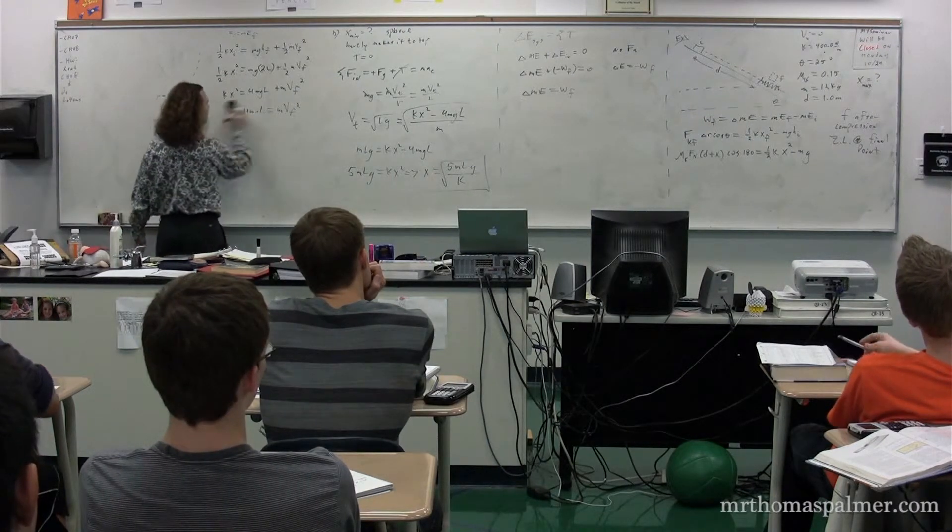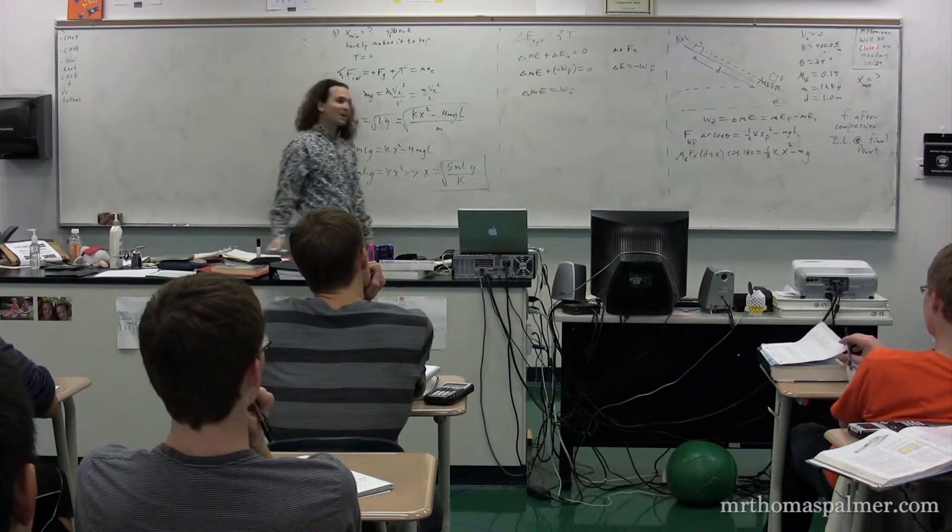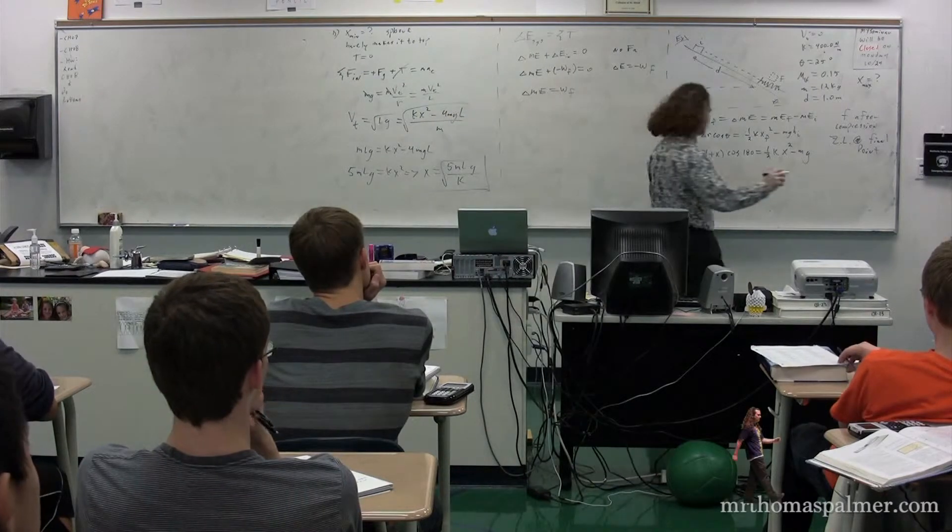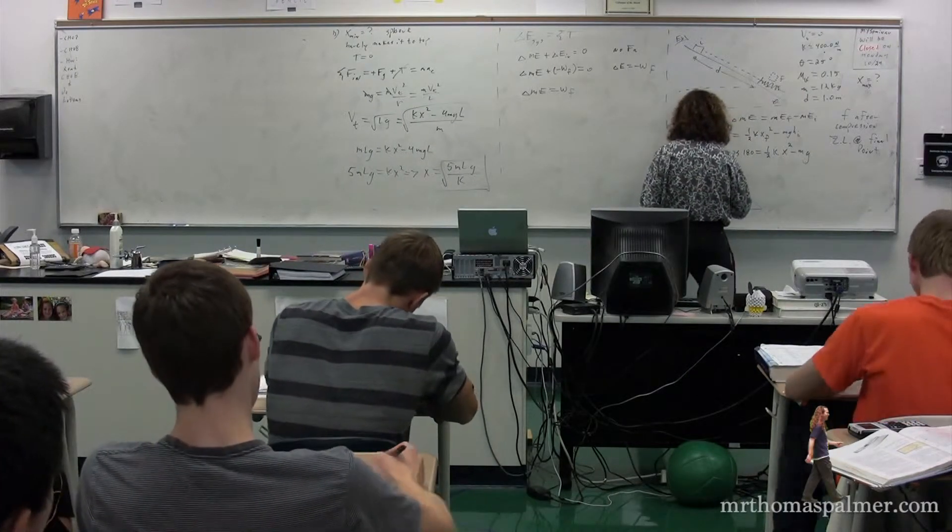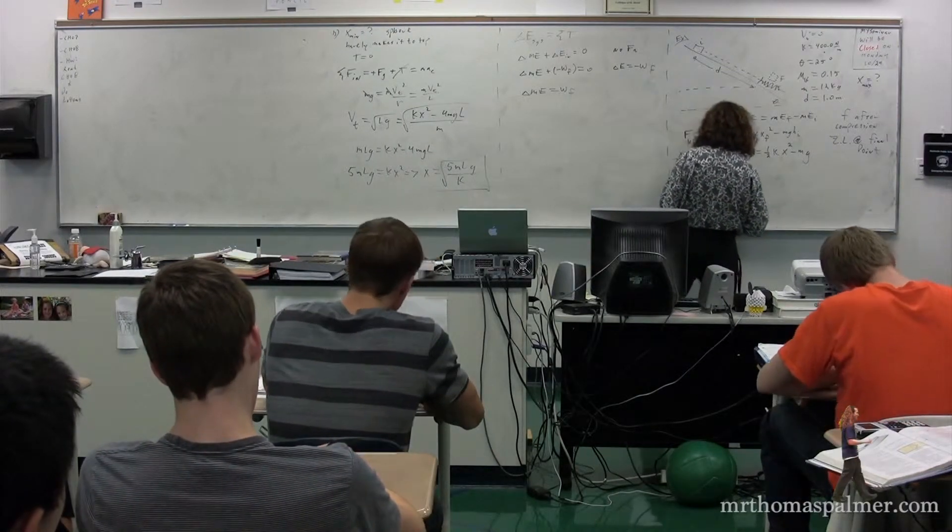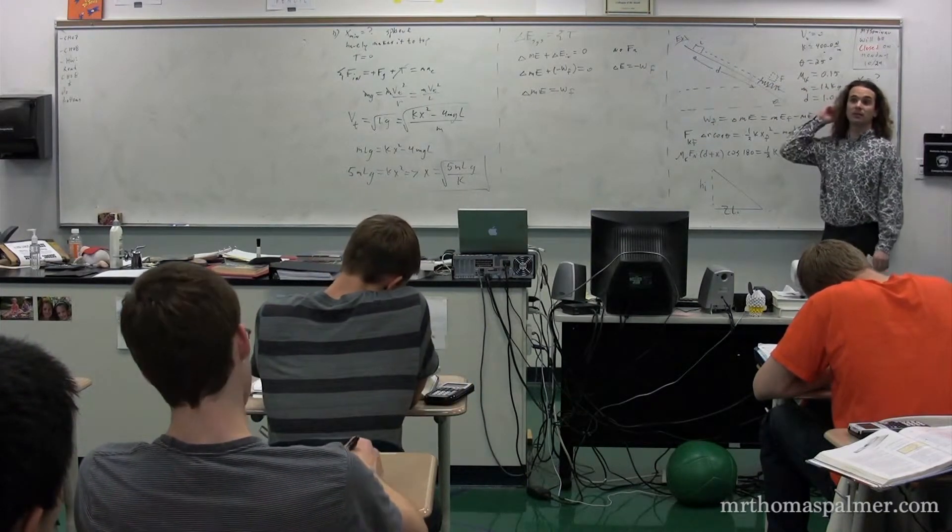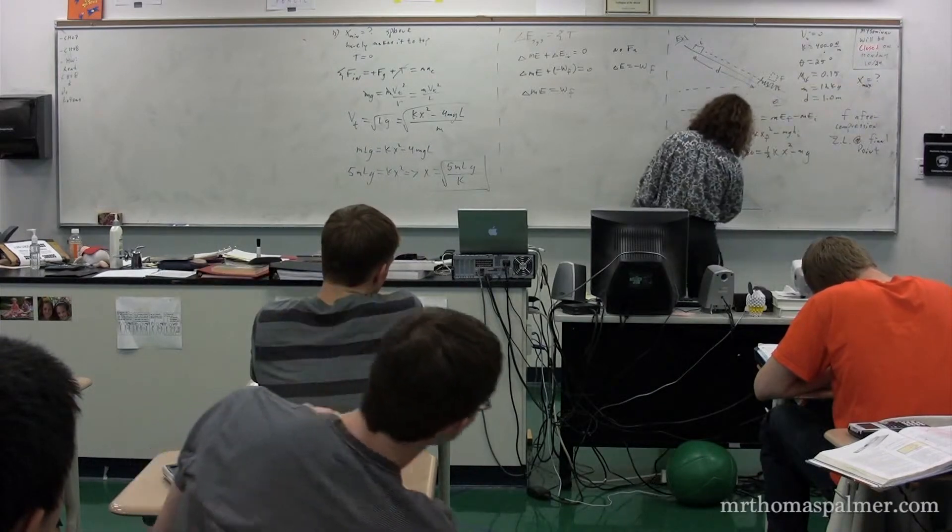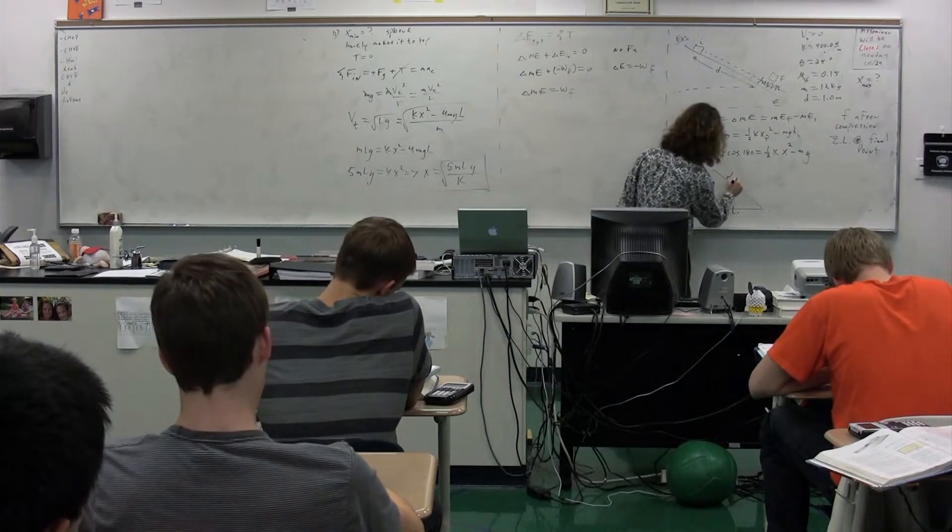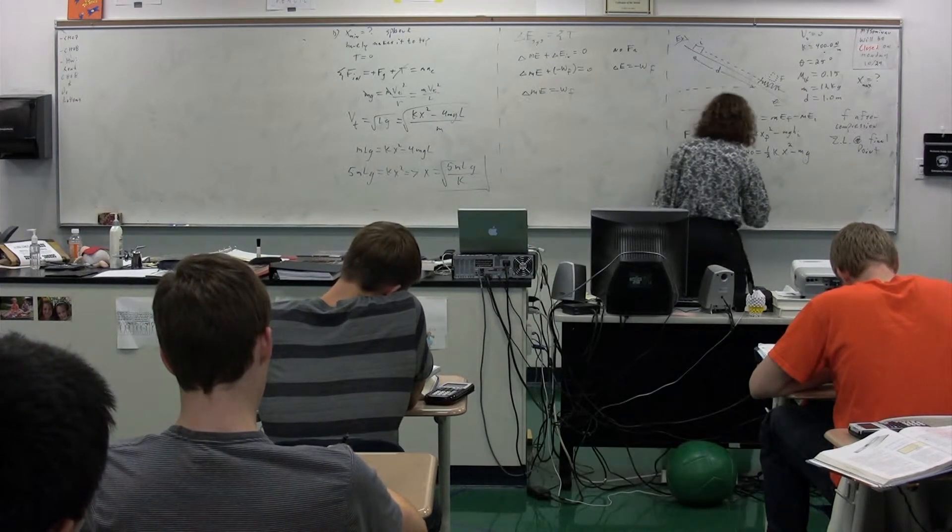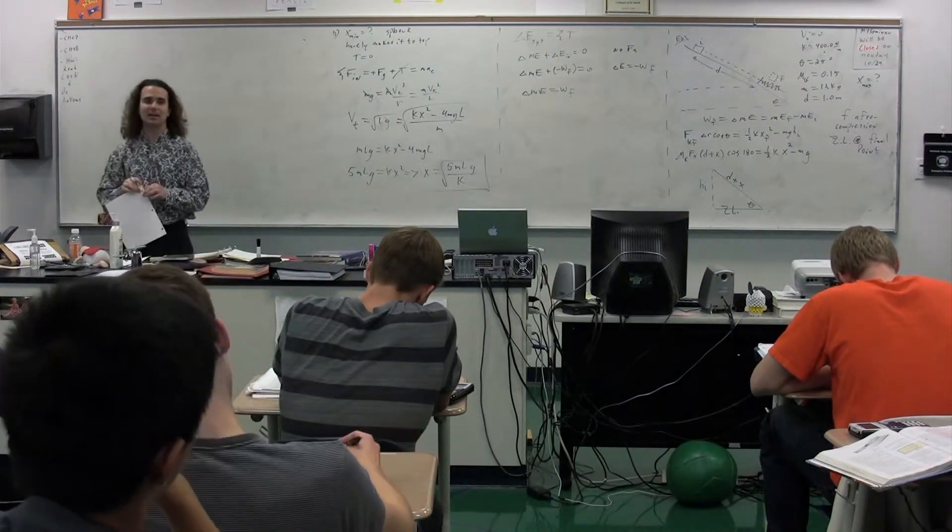No, I don't know. Okay. Let's draw a picture. Height initial is here. Zero line is here. What's on the hypotenuse? D. Say again? D plus X. D plus X. This is theta. So what do we need to do in order to figure out the height initial?